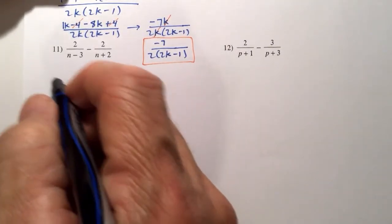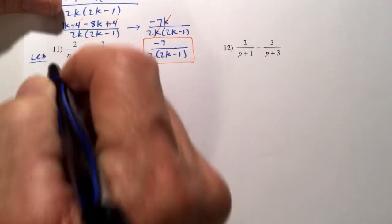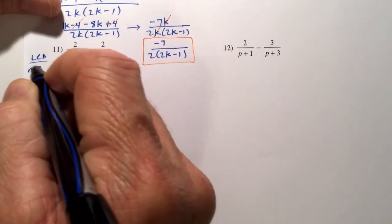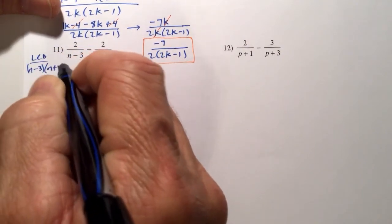Finally, in example number 11, we should identify the lowest common denominator is n minus 3 times n plus 2.